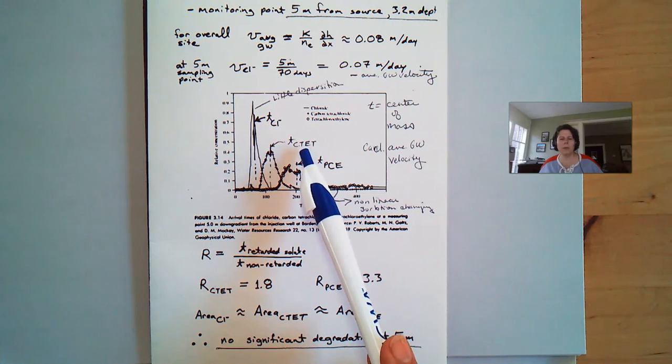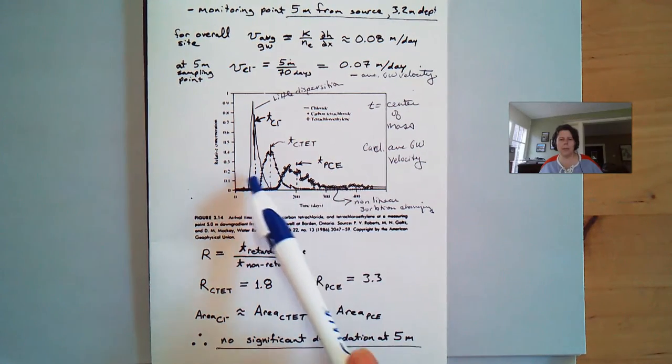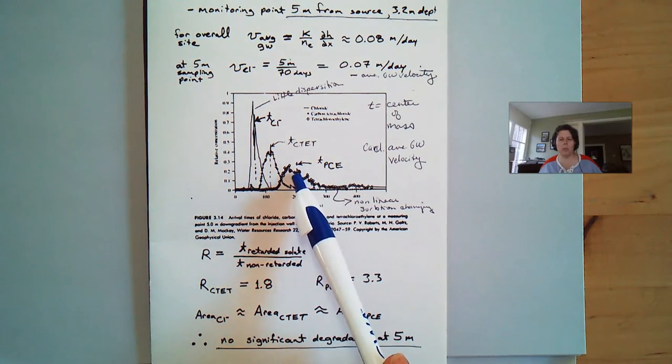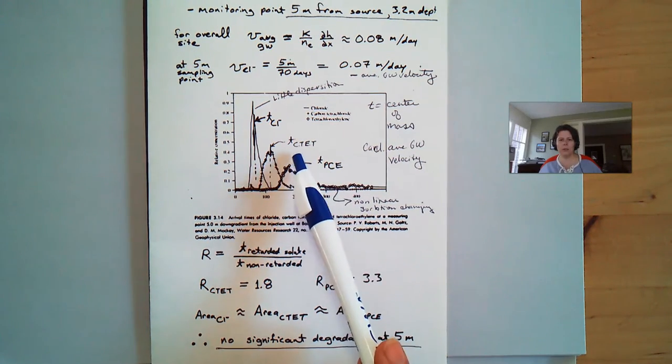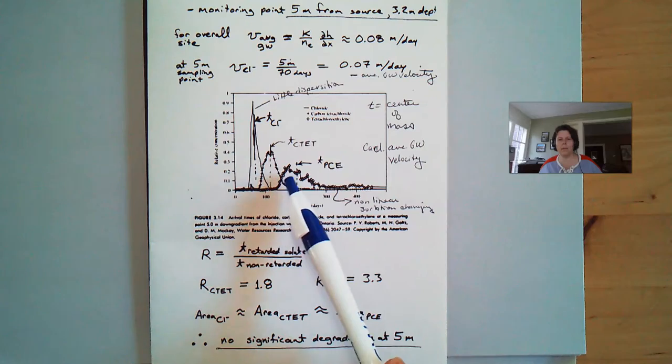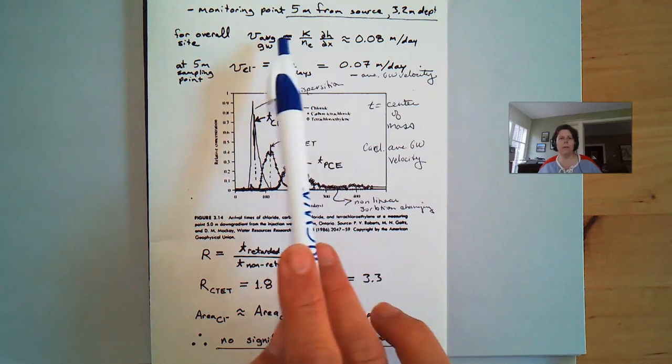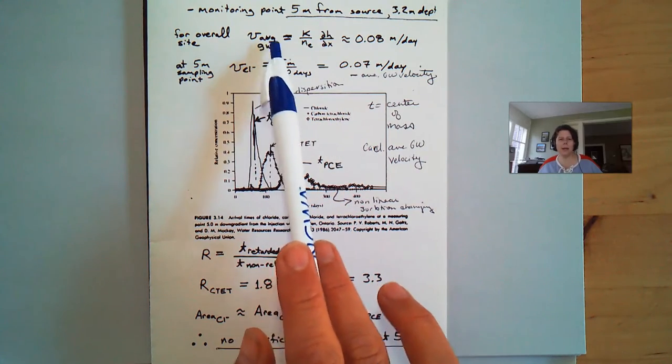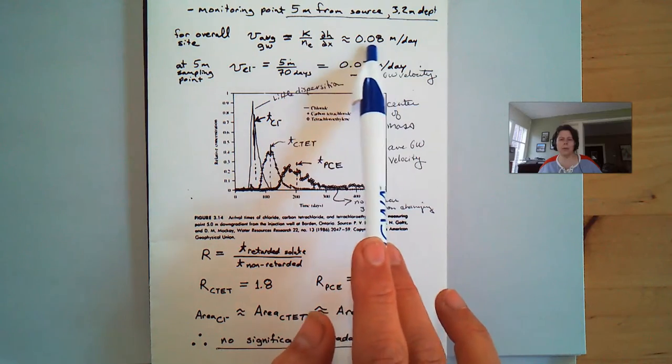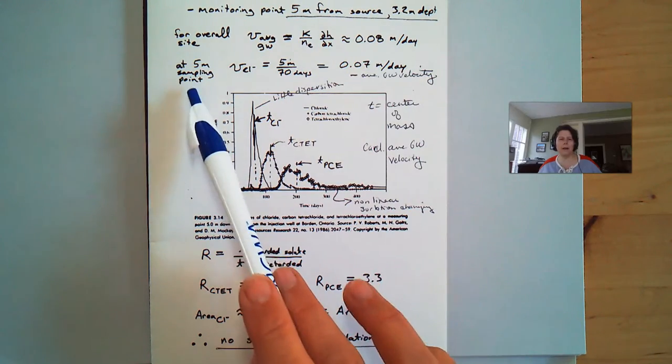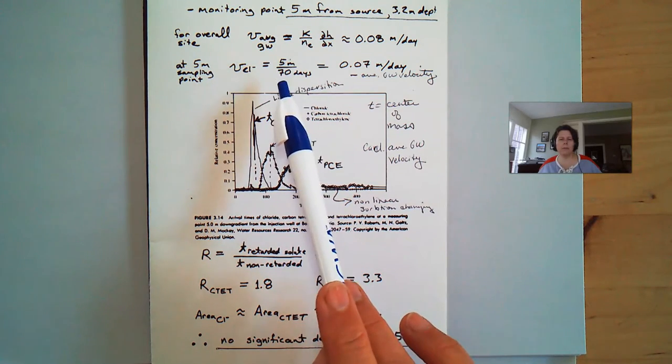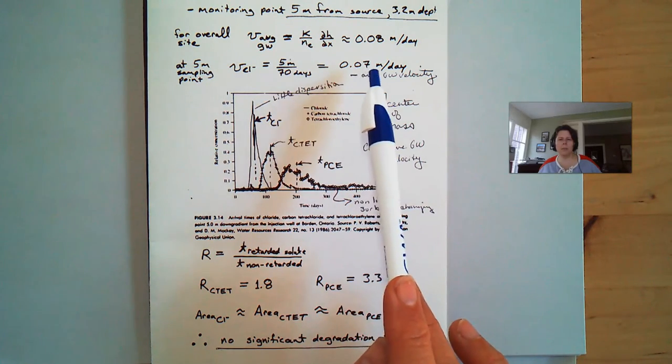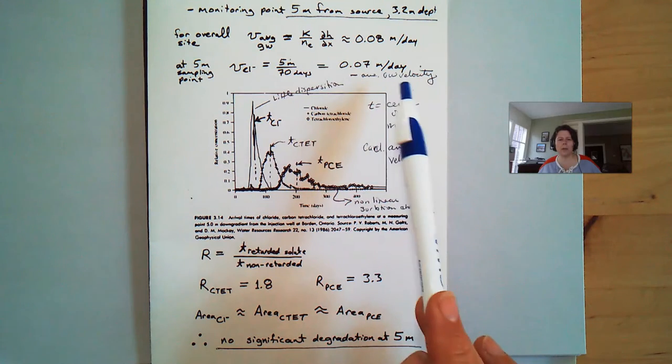And then we're comparing it to the carbon tet and the PCE. You can see how the times have switched, PCE having greater retardation than the carbon tet versus the chloride. For overall for the site, the average groundwater velocity equals 0.8 meters per day at 5 meters away. This is where all the sampling was taken. The velocity - 5 meters took 70 days, so that's 0.7 meters per day. So that's the average groundwater velocity.